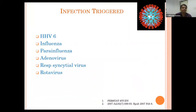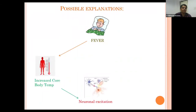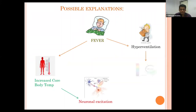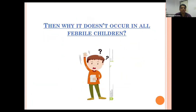The most common infections triggering febrile seizure are viral—HHV6, influenza, parainfluenza virus, adenovirus, RSV, and rotavirus. Fever causes increased core body temperature, which increases neuronal excitability leading to seizure. Fever can also cause hyperventilation, leading to alkalosis, which increases neuronal excitability. Cytokine storm or interleukin-1B can cause fever, which again increases core body temperature and neuronal excitation; cytokines can also directly cause neuronal excitation.